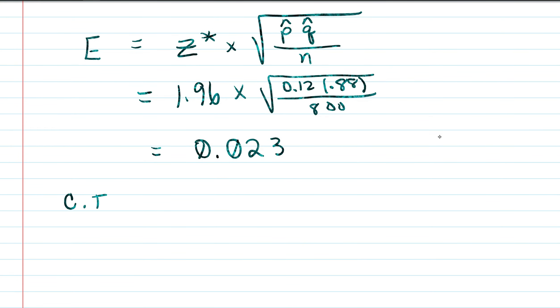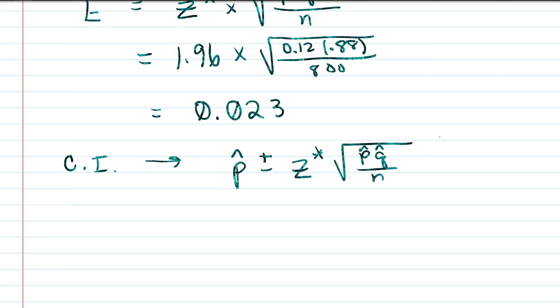So to calculate the confidence interval for a proportion we're going to take p-hat plus and minus our z-asterisk times the p-hat times q-hat over n. All right so for us we're going to have 0.12 minus 0.023 and 0.12 plus 0.023. All right so crunching those values we should get 0.097 and 0.143.